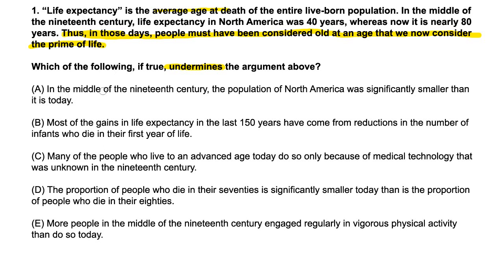Answer A says: in the middle of the 19th century, the population of North America was significantly smaller than it is today. Well, regardless of the size, I don't think that really affects how old people were. You could have a small population that was old, or a large population where people died young. So it doesn't actually matter — A is pretty irrelevant.